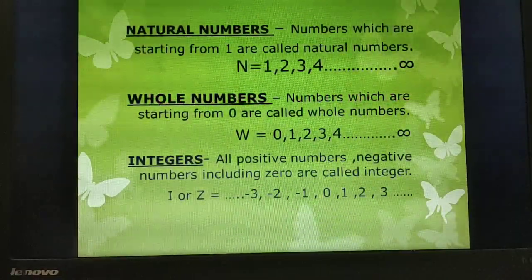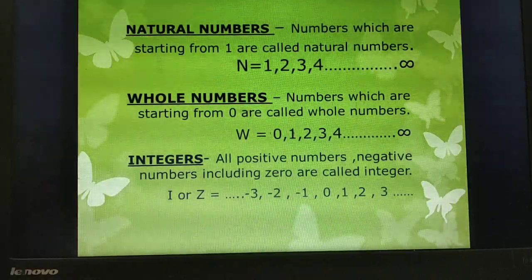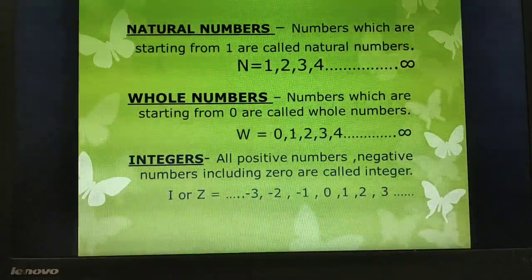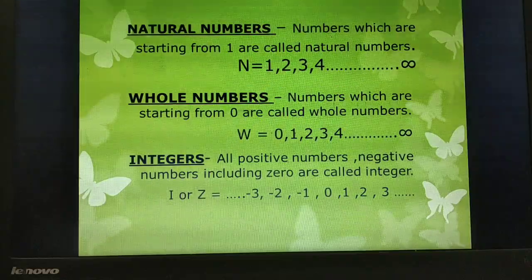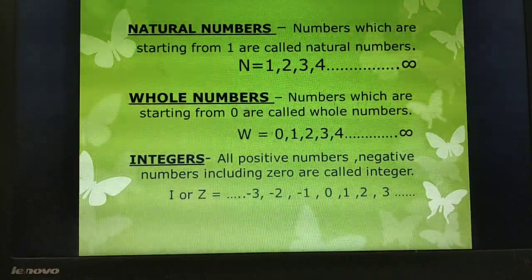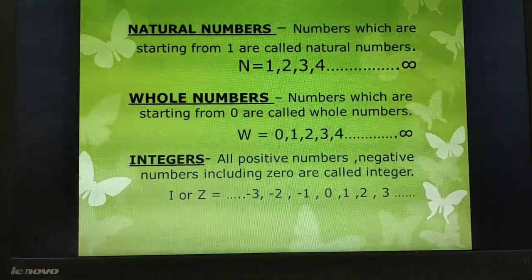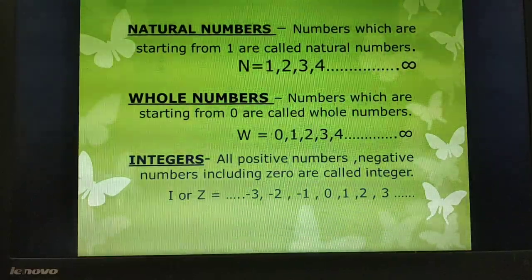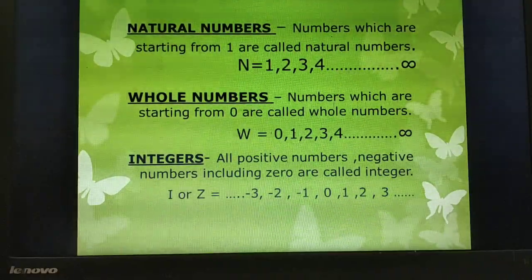Natural Numbers: Numbers which are starting from 1 are called natural numbers. It is represented by N and the numbers are 1, 2, 3, 4 and so on. Next is Whole Numbers: Numbers which are starting from 0 are called whole numbers. It is represented by W and the numbers are 0, 1, 2, 3, 4 and so on.